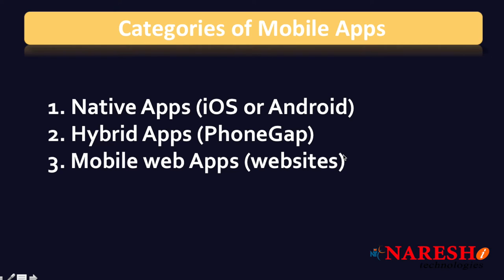We basically have three categories of mobile applications: native apps, hybrid apps, and mobile web applications. Native applications can be native iOS, Android, BlackBerry, or Windows.